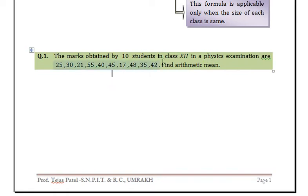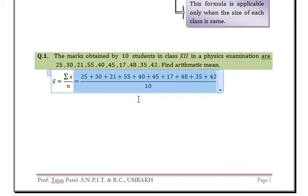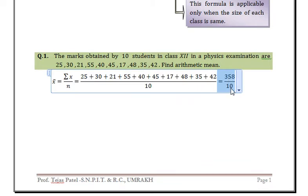Example 1: The marks obtained by 10 students in class 12 in a physics examination are given. Find the arithmetic mean. We have only observations, so the formula is x-bar equals summation x upon n. Summation x means addition of all the marks, and n is the total number of students. We get 358 divided by 10, so the mean is 35.80.